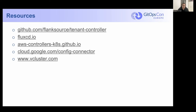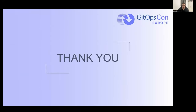Here are some links to some of the projects we're using. The Flanksource tenant controller is customized to our application use case, but you could clone it and use it for your own purposes. We also use Flux, a GitHub connector, and VCluster for tenant isolation. Thank you very much everyone, I hope you enjoyed.